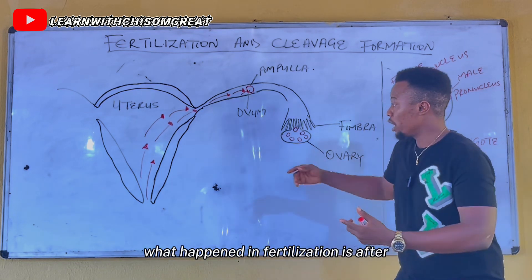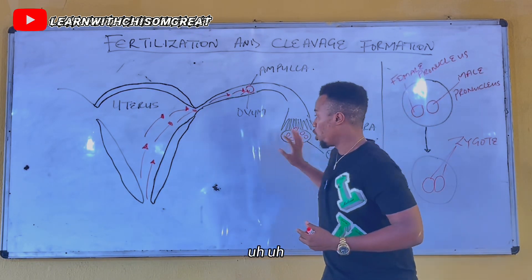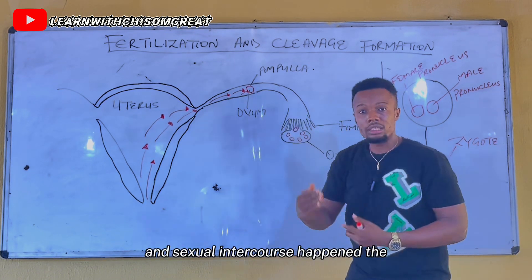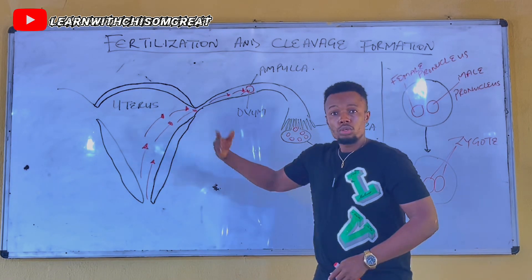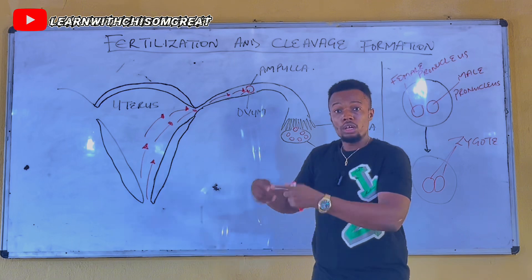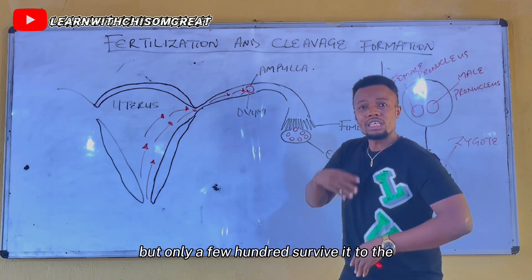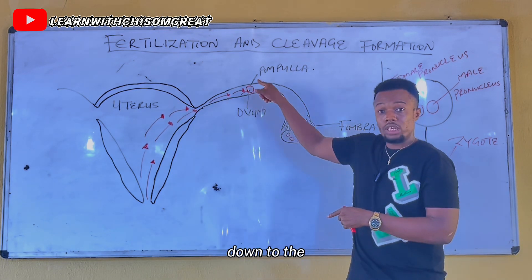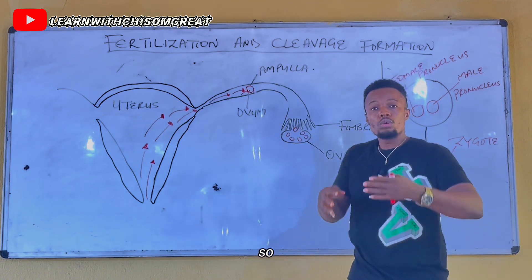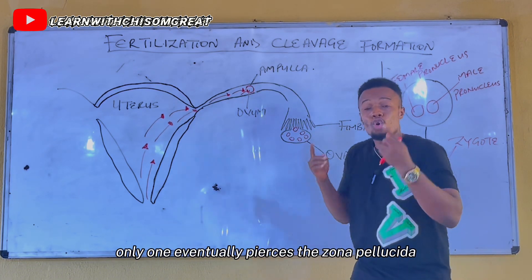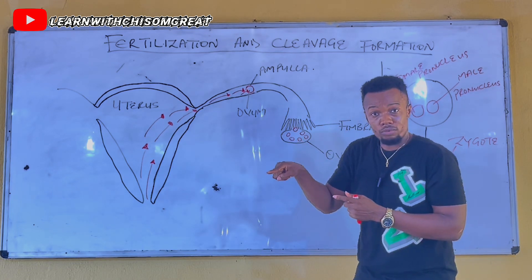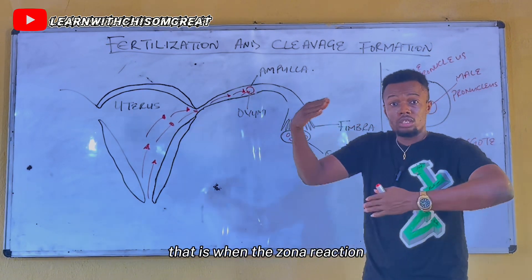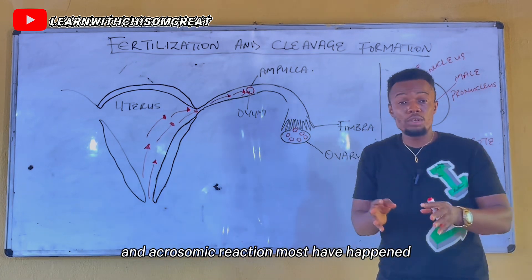After ovulation, that is after the ovum has been released and sexual intercourse happens, the sperm released into the female genital tract are millions. But only a few hundred survive to reach around the ovum. Of those few hundred lying around the ovum, only one eventually pierces the zona pellucida — after which the zona reaction and the acrosomal reaction must have happened.